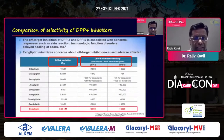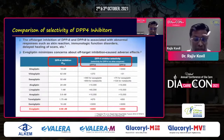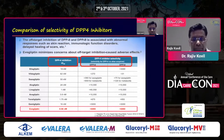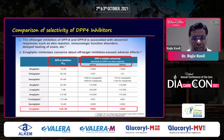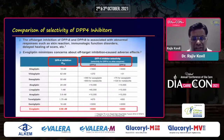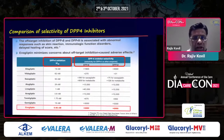Looking at the IC50, which talks about potency, evogliptin requires only 0.9 nanomoles — making it very potent. Regarding off-target actions, evogliptin's effects on DPP8 and DPP9, which cause immunological and skin-related reactions, are very limited. Hence we are using a very safe gliptin.